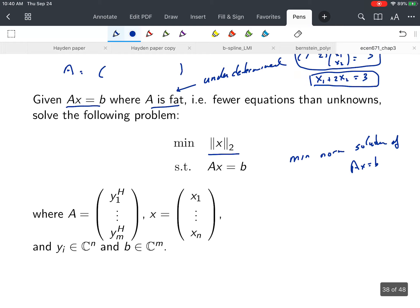If we think of A in terms of its row vectors, A is [y₁^H, ..., y_m^H]^T. So A is M by N, each yᵢ is in ℂ^N, and b is in ℂ^M. Clearly, x is in ℂ^N.